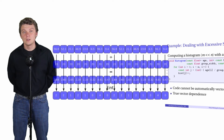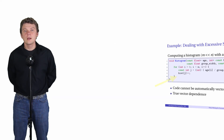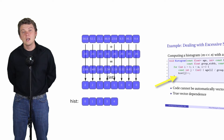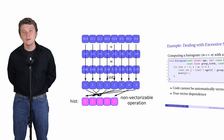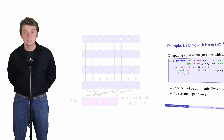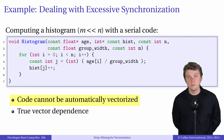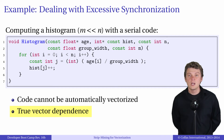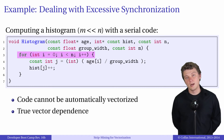On the Xeon Phi coprocessor, that means processing 16 numbers at a time. However, in the second line of our code where histogram counters are incremented, there is data dependency, because several elements of array 'age' can end up in the same histogram group. Therefore, the same histogram counter would need to be simultaneously incremented multiple times. Such operations are not supported by the vector processing unit on Intel CPUs or coprocessors. This is a case of true vector dependence, and because of it, the compiler will refuse to automatically vectorize the for loop in line 3.